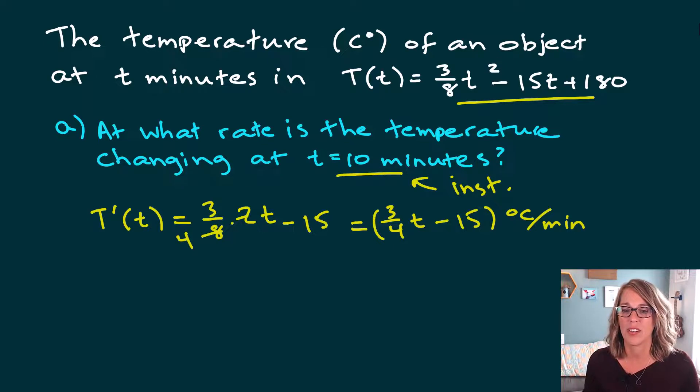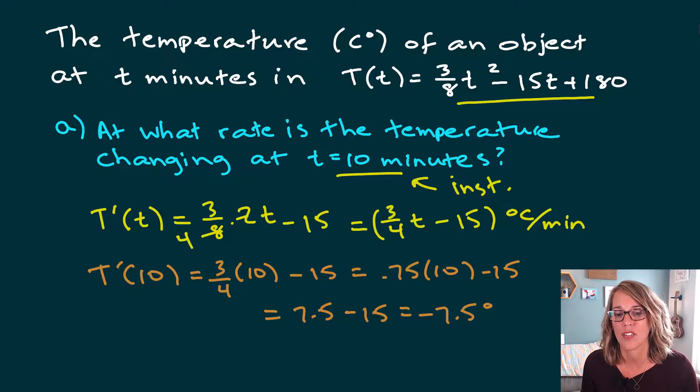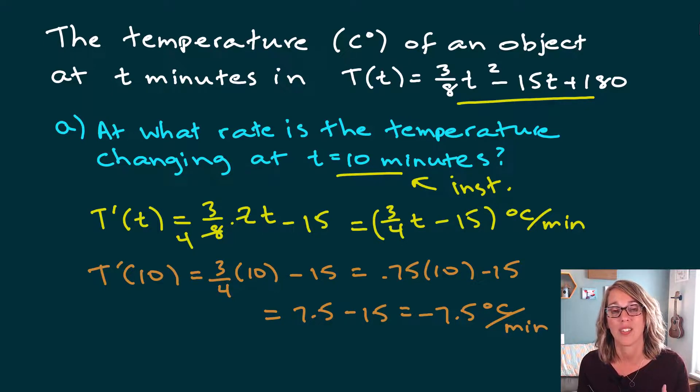This is a formula for that instantaneous rate of change in degrees Celsius per minute. Okay, let's go ahead and look for this rate of change. So t prime at 10 minutes. So now I'm going to plug in 10. So this is going to be three fourths times 10 minus 15. If I do the math here, this is 0.75 times 10, that makes my life just a little bit easier. I don't need to pull my calculator out. And we end up with 7.5 minus 15, which is negative 7.5. And I know that my units are degrees Celsius, so Celsius per minute.